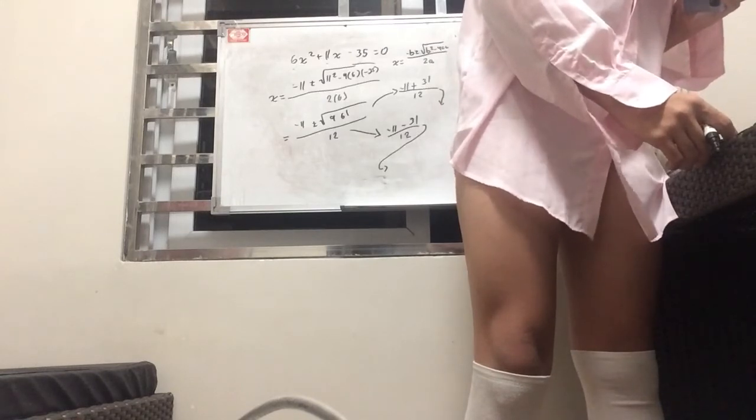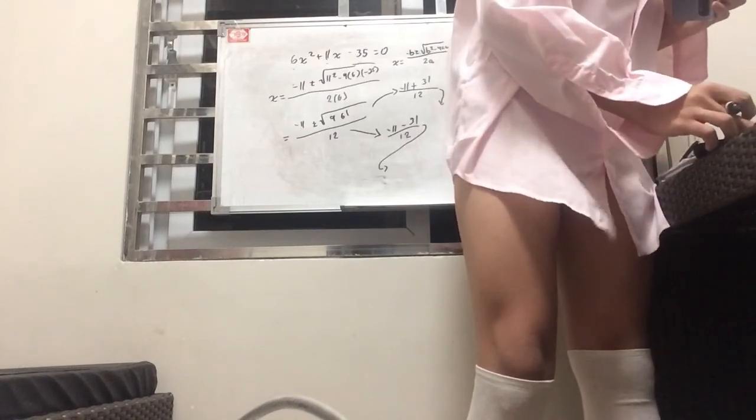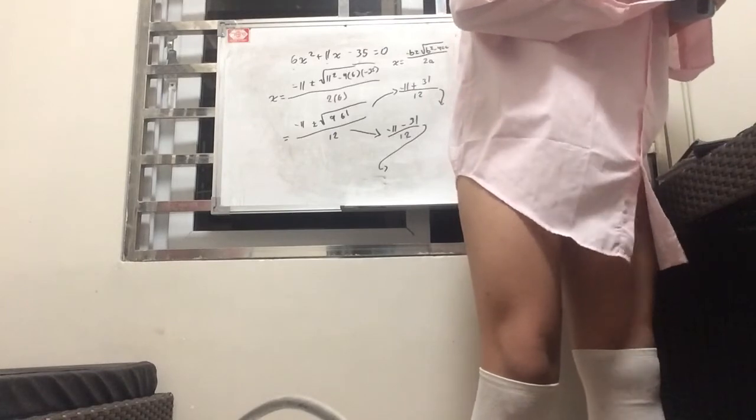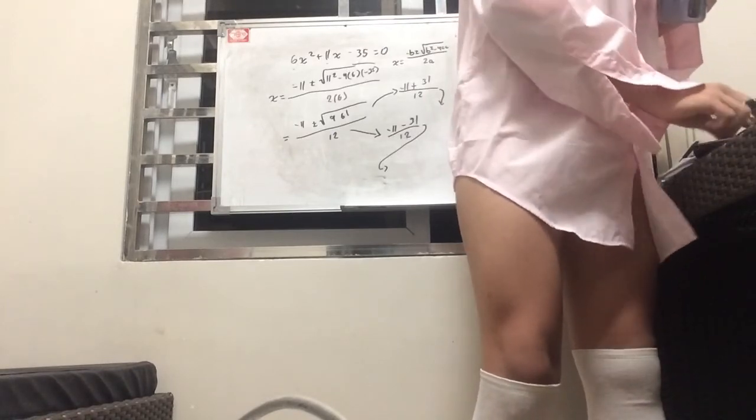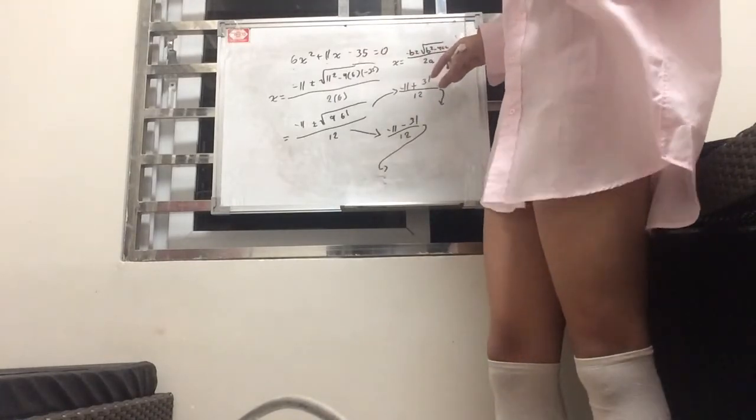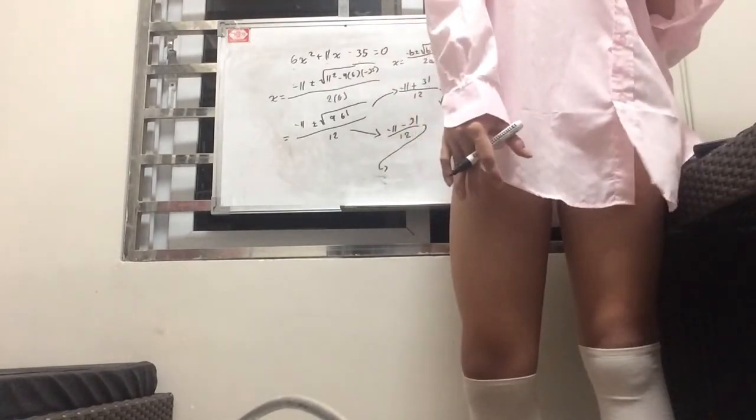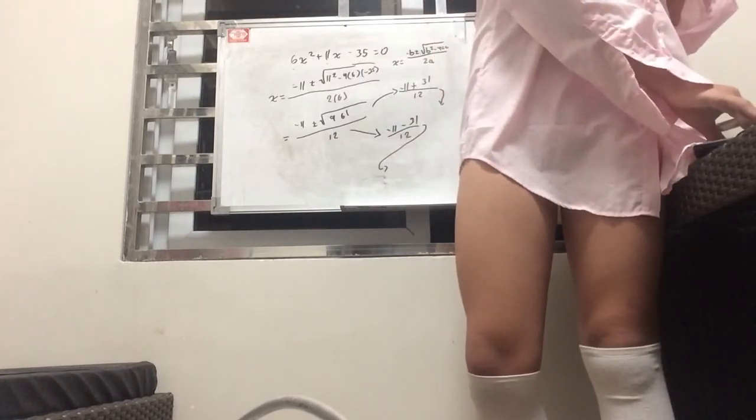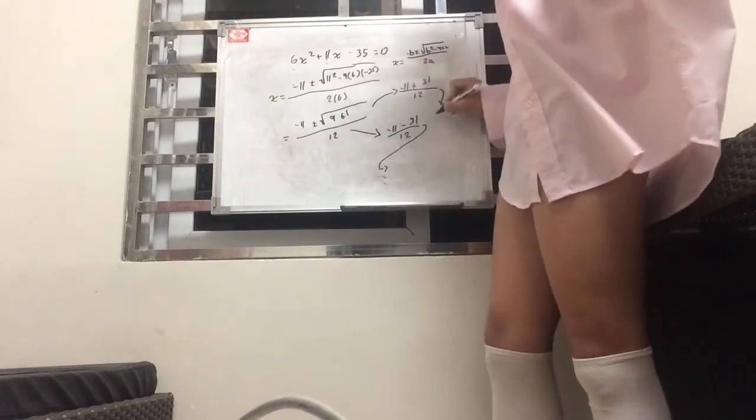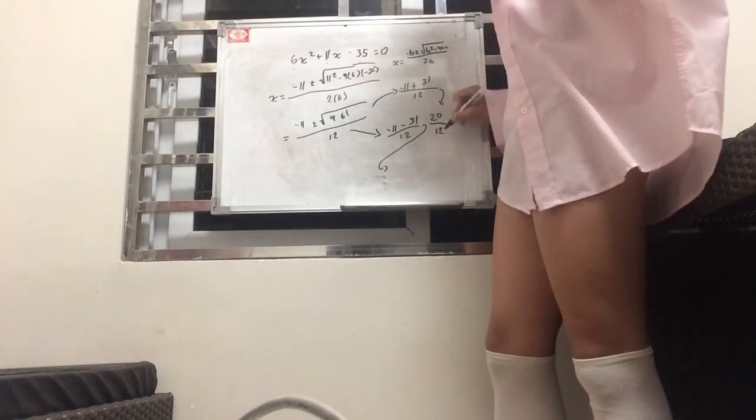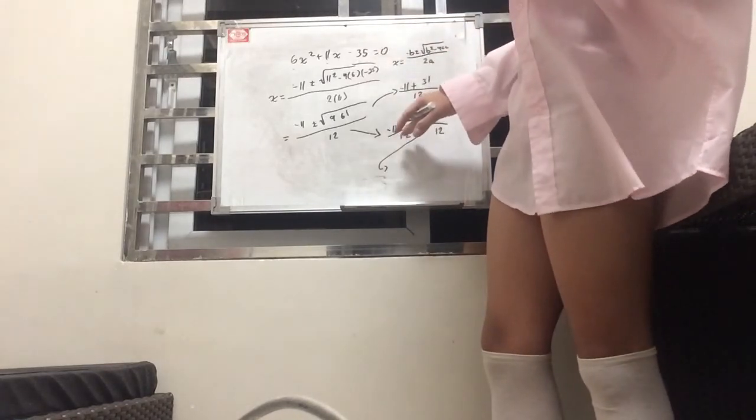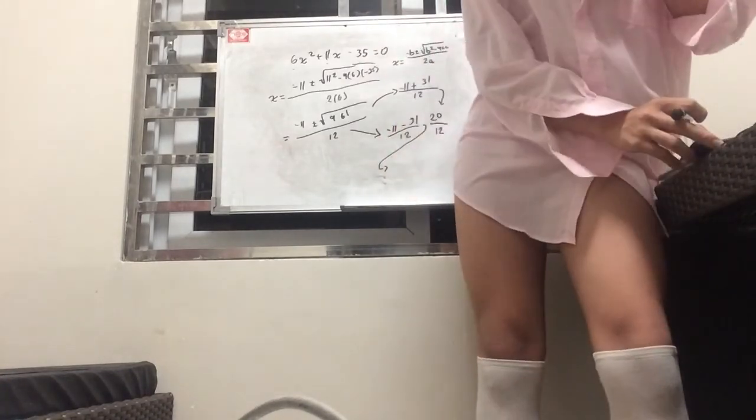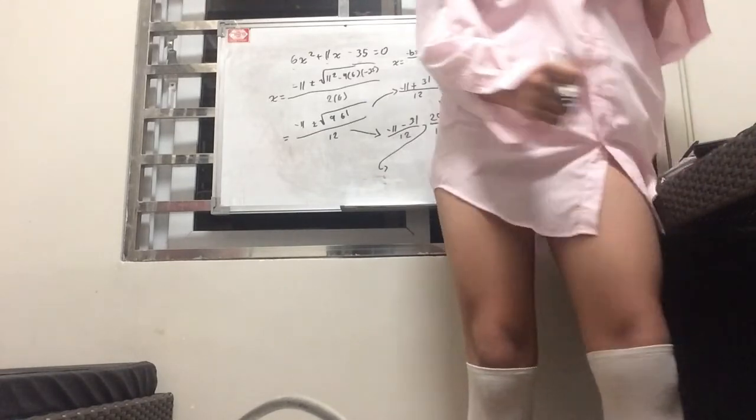So, that would be negative 11 plus 31 divided by 12. But if you add those, it's technically minusing it. So, 31 minus 11. That would be 20. So, 20 over 12.